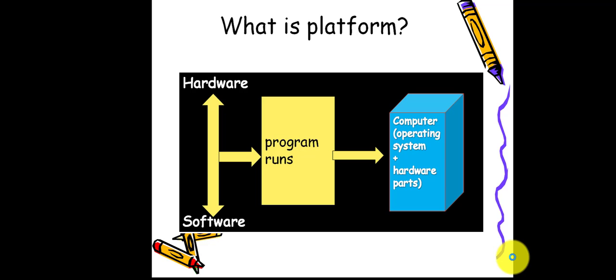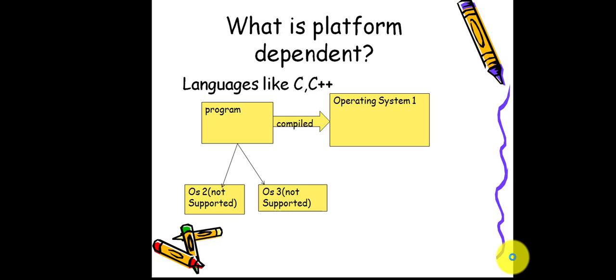What is meant by a platform-independent language? First, let me tell you what a platform is. A platform is nothing but a hardware or software where the program is going to run. We know that the computer is a combination of hardware and software. The hardware includes parts like the CPU and keyboard. The software is the main operating system of your computer — Windows, Mac, Linux, etc. So a platform is the hardware or software in which the program runs, and a computer is also a platform which is a combination of software and hardware.